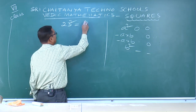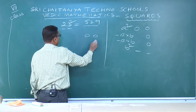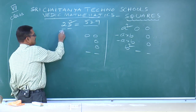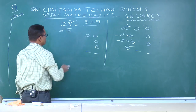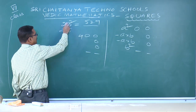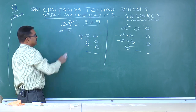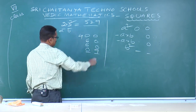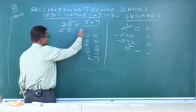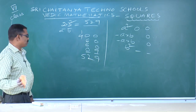Next example: 23². Here a=2, b=3. Use the formula: a²=2²=4, a×b=2×3=6, a×b=2×3=6 again, b²=3²=9. Add: 9; 6+6=12, carry 2; 1+4=5; answer is 529.